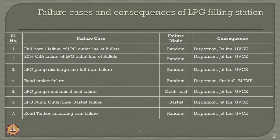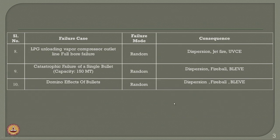Please understand that the failure mode of all these failure cases are more or less random, except some may be dedicated to mechanical systems, which can also be corrected using a detailed FMEA analysis. Subsequently, we also mentioned LPG unloading vapor compression outlet line full bore failure, catastrophic failure of a single bullet and domino effects of bullets, and sequential cascading effects, which can also be a random mode of failure resulting in fireball, BLEVE, and dispersion.